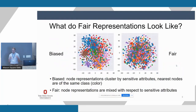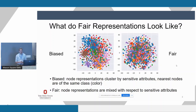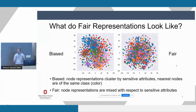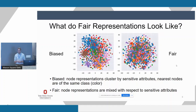I want to challenge us on what a fair representation should look like. Here we see two examples of what our embedding spaces can look like: a biased representation on the left and a fair representation on the right. In the biased example, node representations are clustering based on sensitive attributes — we see a blue blob in the top left and a brown blob right below it. In the fair representation, this is not the case; it's very mixed and difficult to segregate out a specific attribute. Spoiler alert: what you see on the right is what we do achieve.